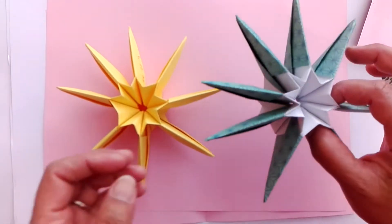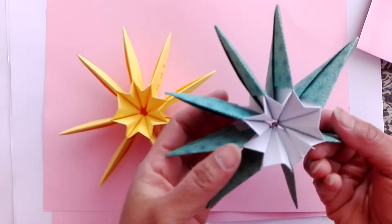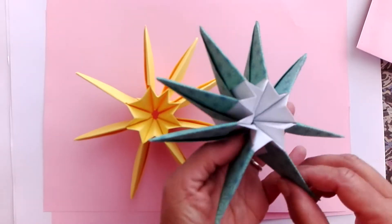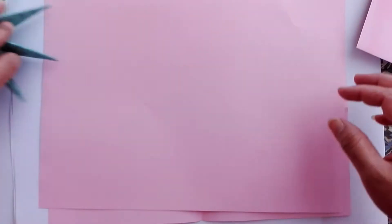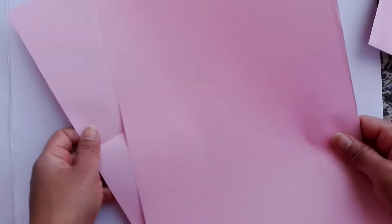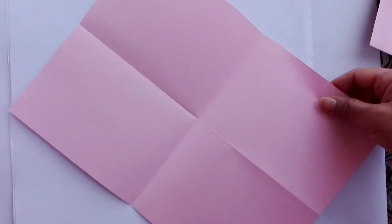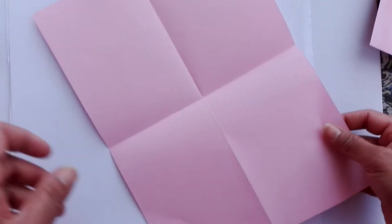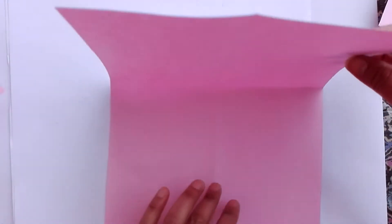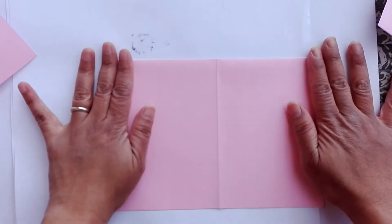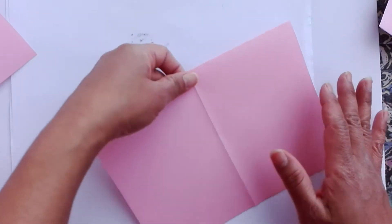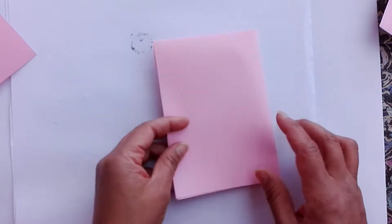Hello, today I want to show you how to make this star. We need two A4 papers and we want to divide them into four equal parts, so we fold it in half and then one more time we fold it in half.